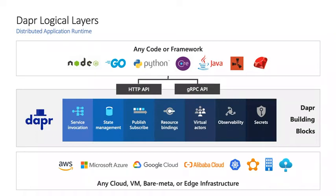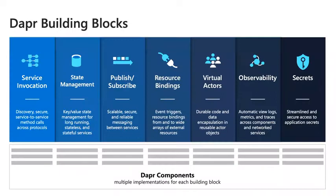At runtime, Dapr exposes APIs — HTTP and gRPC — that give you access to the most common usage patterns we've seen in distributed applications. We generalize them into something that can be consistent to you as a developer yet flexible underneath, so you can plug in a specific implementation. We refer to those as building blocks, and when combined they form an open programming model. You can start today very small, then move between environments and apply changes through configuration without rebuilding your application.